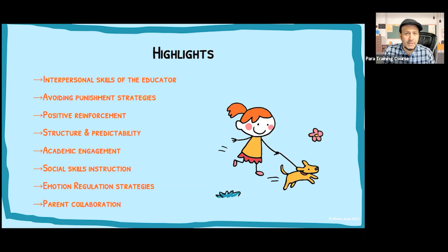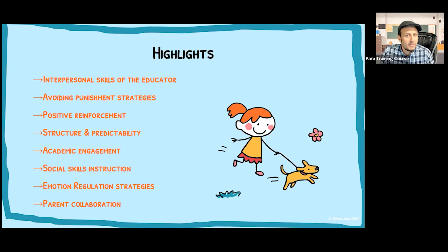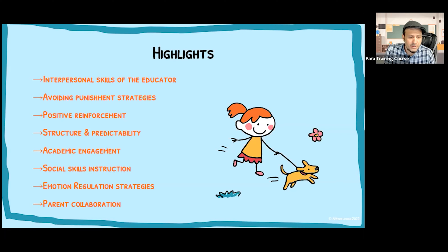Some key takeaways: the interpersonal skills of the educator are huge in all of this. Avoid punishment strategies — we would never take away a reward; we try to catch students being good, and positive reinforcement flows from that. Structure and predictability are things all students, even very misbehaving students, appreciate. Academic engagement: keep students engaged with their studies however we can. Social skills instruction — with peer groups, peer monitors, peer tutors — for students having a hard time connecting with others. Emotion regulation strategies: deep breathing, check-ins, and all that kind of thing. And of course, parent collaboration — that's key in everything we do.